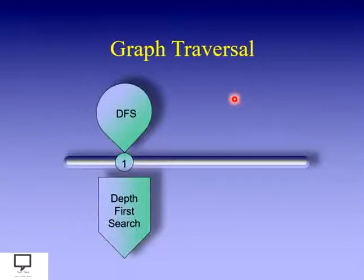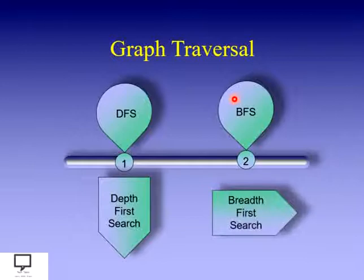And the second technique is the breadth-first traversal technique, where it traverses the graph with respect to breadth, that is on the same level. In this way, we can traverse a graph in two different ways.